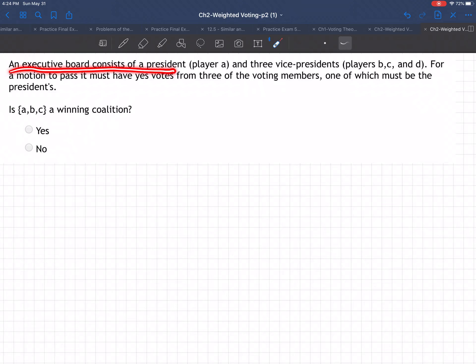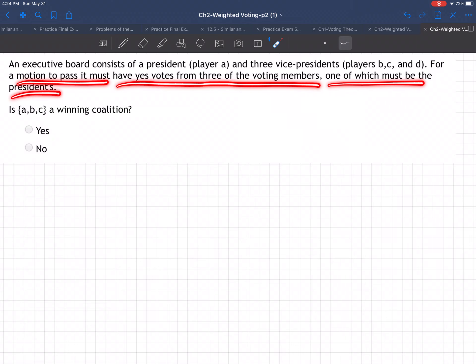An executive board consists of a president (player A) and three vice presidents (players B, C, and D). For a motion to pass, it must have yes votes from three of the voting members, one of which must be the president's.